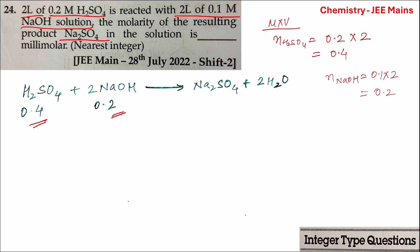To find the amount of Na₂SO₄ formed, first identify the limiting reagent. To identify the limiting reagent, divide the number of moles by the stoichiometric coefficient. Moles of H₂SO₄: 0.4 divided by stoichiometric coefficient 1 equals 0.4. Moles of NaOH: 0.2 divided by stoichiometric coefficient 2 equals 0.1. Since the value for NaOH is less than the value for H₂SO₄, NaOH is the limiting reagent.